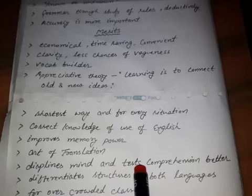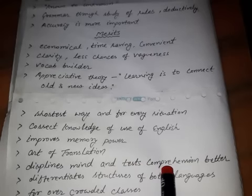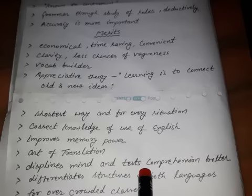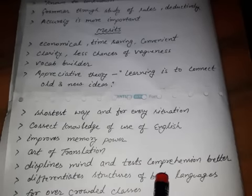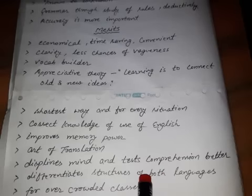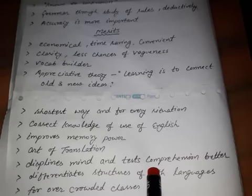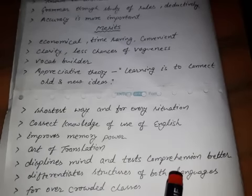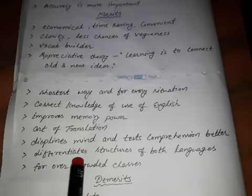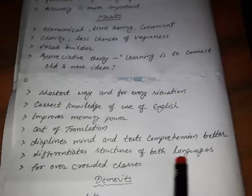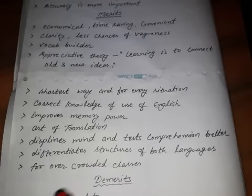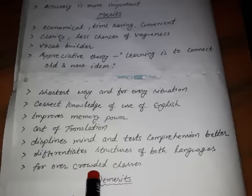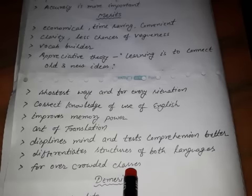For example, a teacher has taught a topic and the student has understood it but cannot explain it in English — the student can tell it in Hindi, which tests comprehension. If a teacher asks a question and the student cannot speak in English, the teacher allows them to explain in Hindi, which shows understanding. This method also differentiates the structures of both languages through compare and contrast. For overcrowded classes, only a blackboard and chalk are needed.